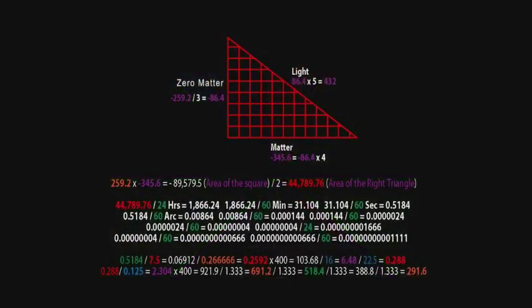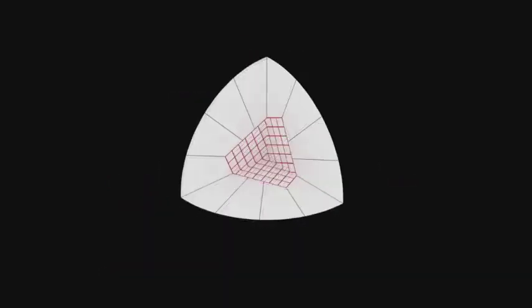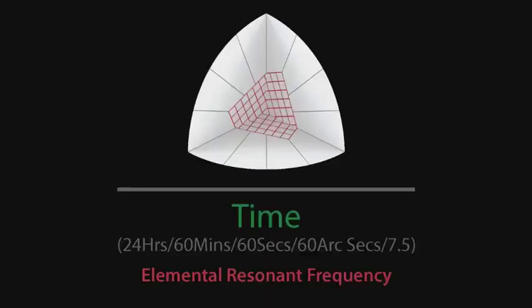This 3-4-5 triangle displays the ratios of zero matter to light and light to matter. From the area of the triangle defined by this right triangle with the ratios of 3 to 4 to 5, we are able to calculate the resonant frequency of the element. This is done by dividing the ATV by time.